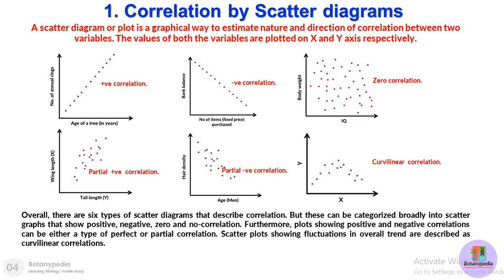Positive correlation scatter plots can be further categorized into two types. If you look at the first one, where age of the tree in years and number of annual rings are plotted, all the observations fall on a perfect line — this is a perfect positive correlation. Likewise, perfect negative correlation where all points fall on a straight line is also very rare in biology.